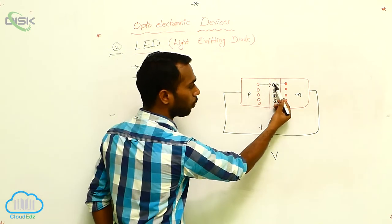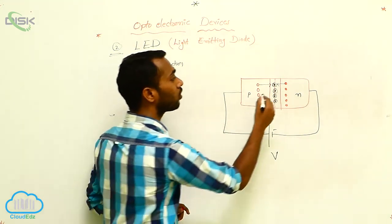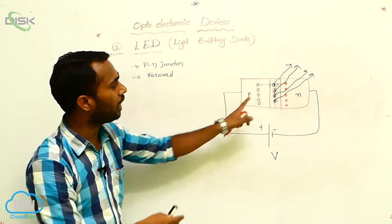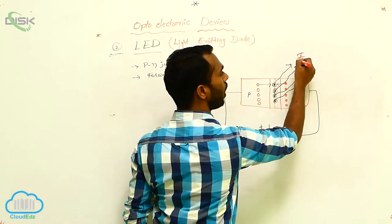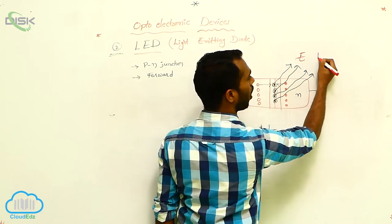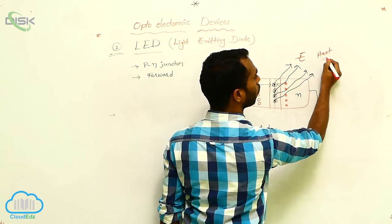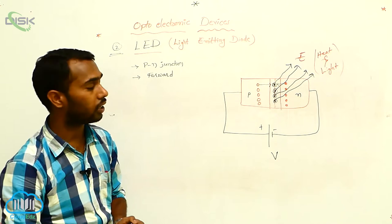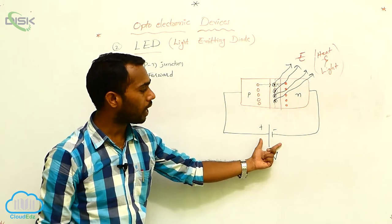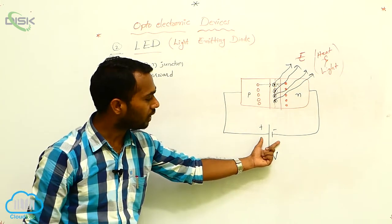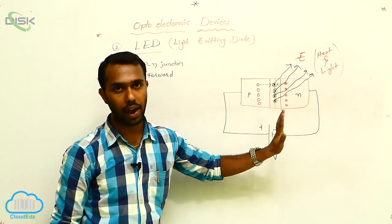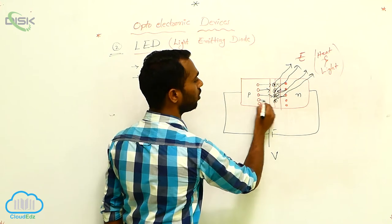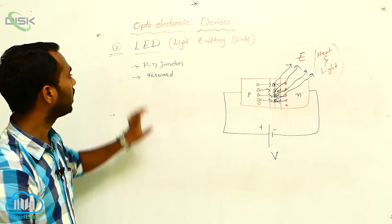The hole is moving towards the junction, and the electron also moving towards the junction. At that time, combination takes place between the holes and electrons. In this process, whenever these two are joined, some energy releases. Electron has some energy; hole has some energy. Whenever these two join, that releases some energy. This energy may be in the form of heat and also light. So energy releases — in this LED, the energy released is light energy. I am applying electrical energy, and this converts electrical energy into light, because of the recombination of holes and electrons. In this recombination process, energy releases in the form of light. That is what we call LED.